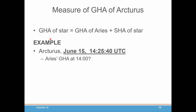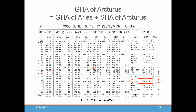Let's take an example. Let's say we want to sight Arcturus on June 15th, and we sighted it at 14:25:40 UTC. So we start, as we always do, by starting at the hour — the 14-hour mark — and we get the Aries GHA. Here's the table for that date. On the 14th hour, we see the GHA of Aries is 113 degrees 26.4 minutes.